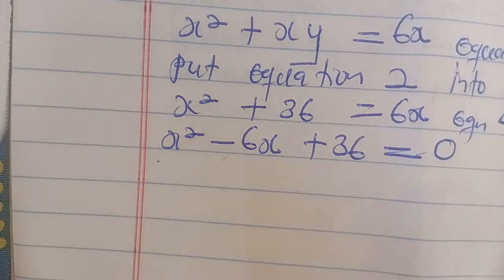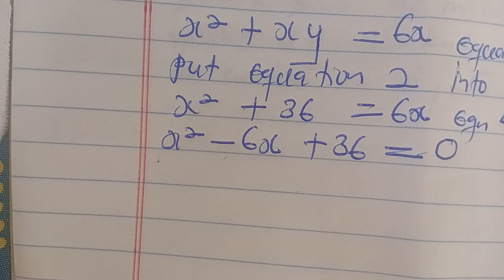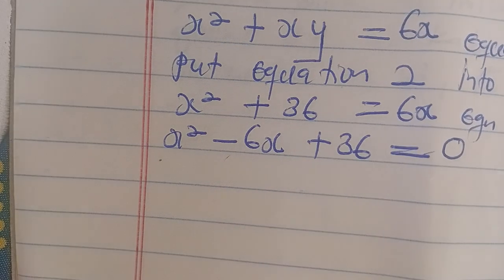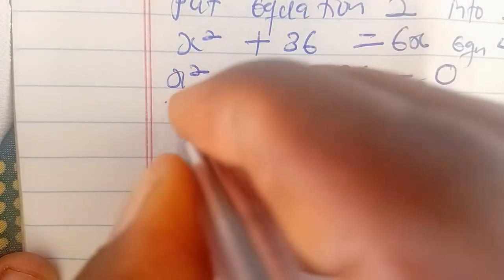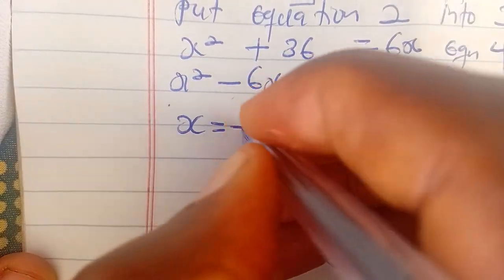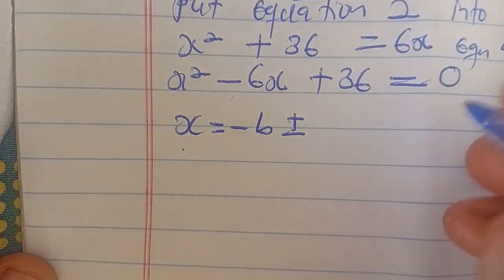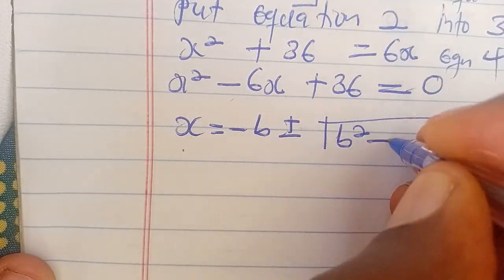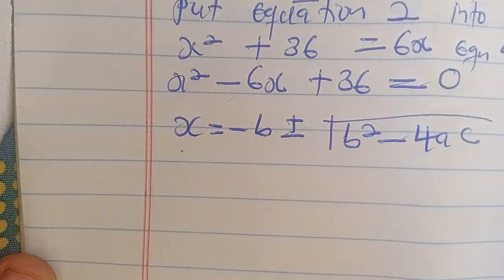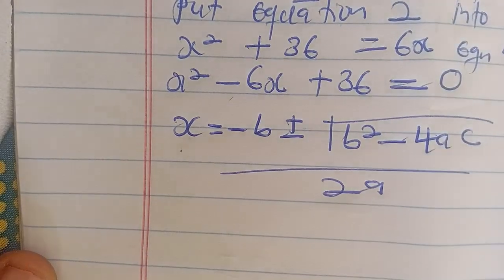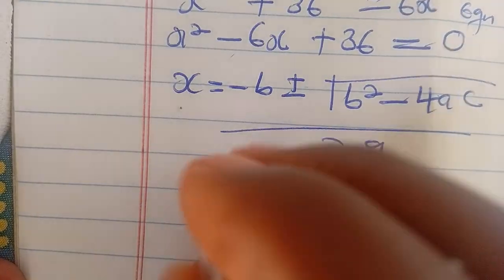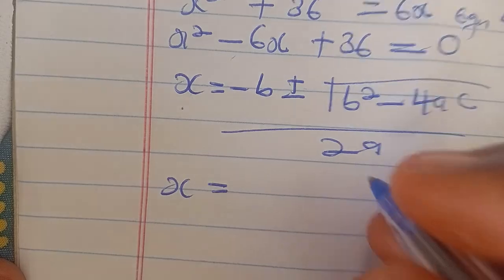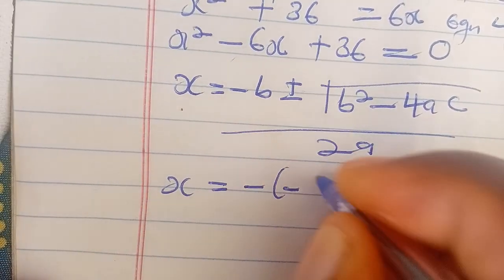What we have here is a quadratic equation, so we need to apply the quadratic formula in order to solve it. We can say x is equal to minus b plus or minus the square root of b squared minus 4ac, all over 2a. So we are going to have x equal to minus minus 6...